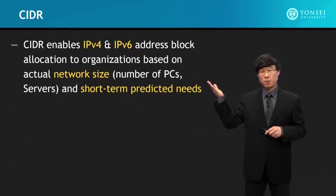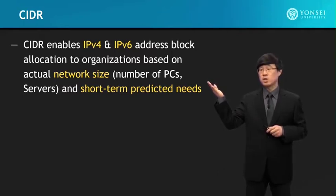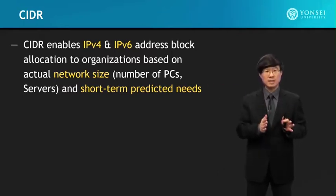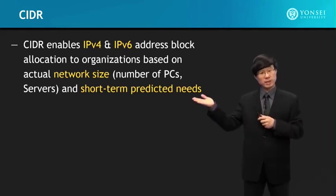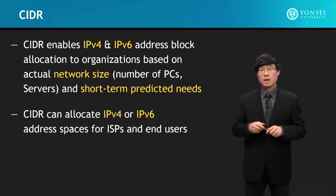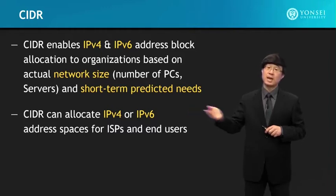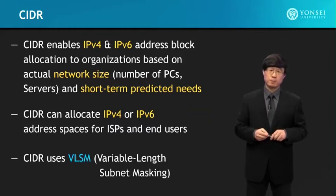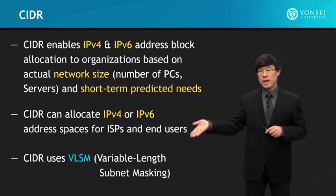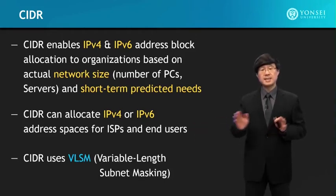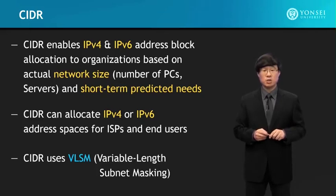CIDR enables IPv4 and IPv6 address block allocations to organizations based on their actual network size and short-term predictive needs. This can be used to allocate address spaces to Internet service providers as well as end users. VLSM — Variable Length Subnet Masking — is the technique that CIDR notation uses.